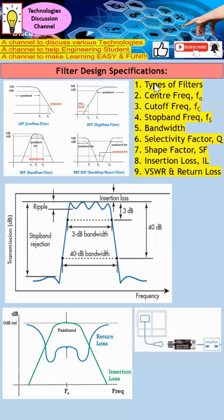The first one will be the types of filter. There are mainly 4 types of filter: low pass filter, high pass filter, band pass filter, and band stop or band reject filter.